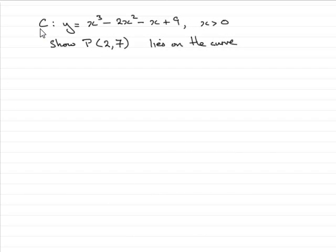For the first part of the question, we've got the curve C such that y equals x cubed minus 2x squared minus x plus 9, and we're told x is greater than 0. We need to show that the point P(2,7) lies on the curve.